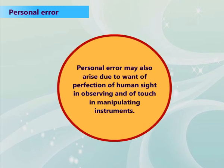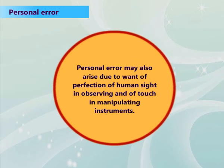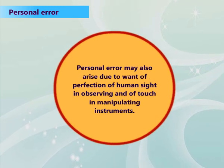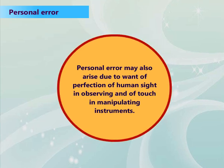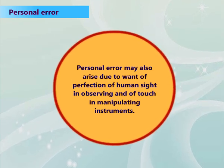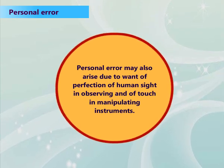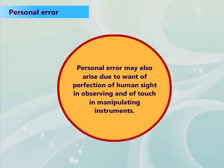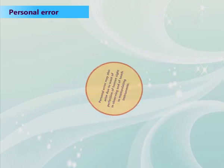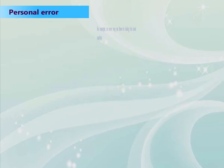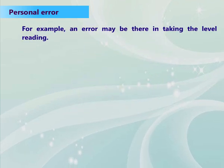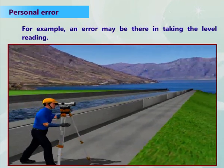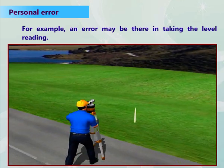Personal error may also arise due to want of perfection of human sight in observing and of touch in manipulating instruments. For example, an error may be that in taking the level reading.